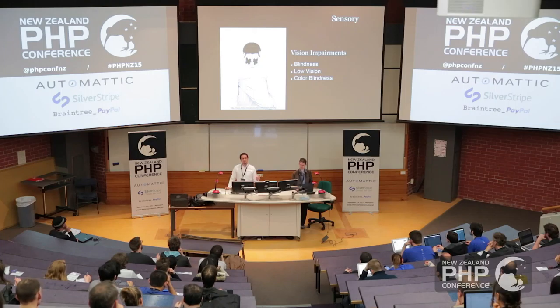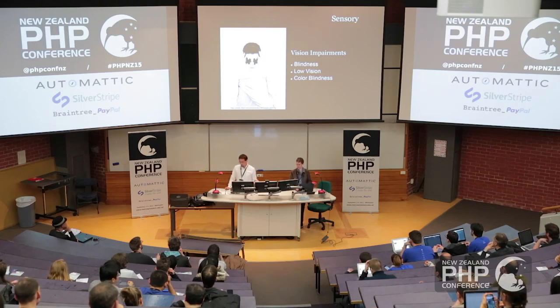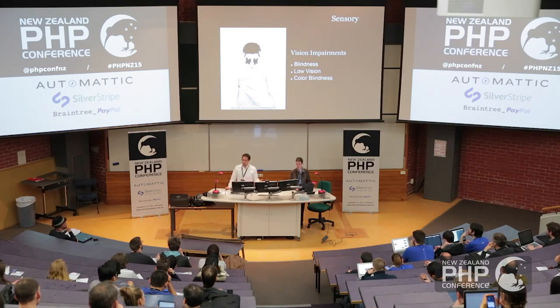Blindness is the one that comes to mind when we think about web accessibility, because for most people the web is a highly visual medium, and you wonder how a blind person can interact with it. But it's important to note that blind people are actually a very small number of those with vision impairments. By far, the number of people with vision impairments who just have low vision is much greater. And there's a range of people with different types of color blindness as well.